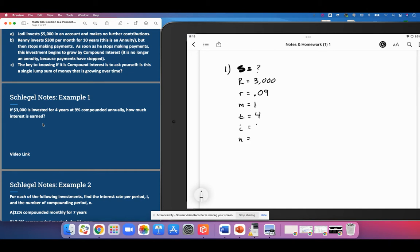i is r over m and n is m times t. In my case this would be 0.09 over one, and m times t would be one times four. So I would get 0.09 and I would get four. I could put those in Wolfram.